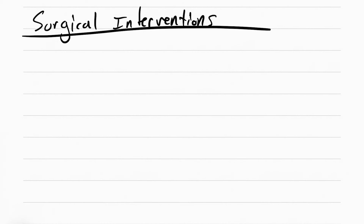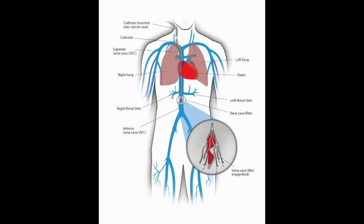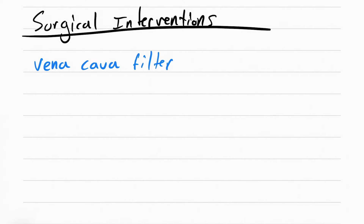A surgical intervention that can be done if the patient can't receive anticoagulants is a vena cava filter. This is inserted to catch the clot. There is a risk for dislodgement and it's not preferred over anticoagulants — it's only used when the patient has a contraindication to anticoagulants.